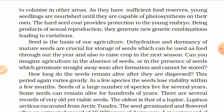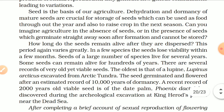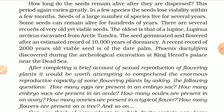Seed is the basis of our agriculture. Dehydration and dormancy of mature seeds are crucial for storing seeds, which can be used as food throughout the year and to raise crops in the next season. The period seeds remain alive after dispersal varies greatly — in a few species, seeds lose viability within a few months, while seeds of many species live for several years and some for hundreds of years. The oldest viable seed on record is that of lupine (Lupinus arcticus) excavated from arctic tundra, which germinated and flowered after an estimated 10,000 years of dormancy. A recent record of a 2,000-year-old viable seed is that of the date palm (Phoenix dactylifera), discovered during archaeological excavation at King Herod's Palace near the Dead Sea.